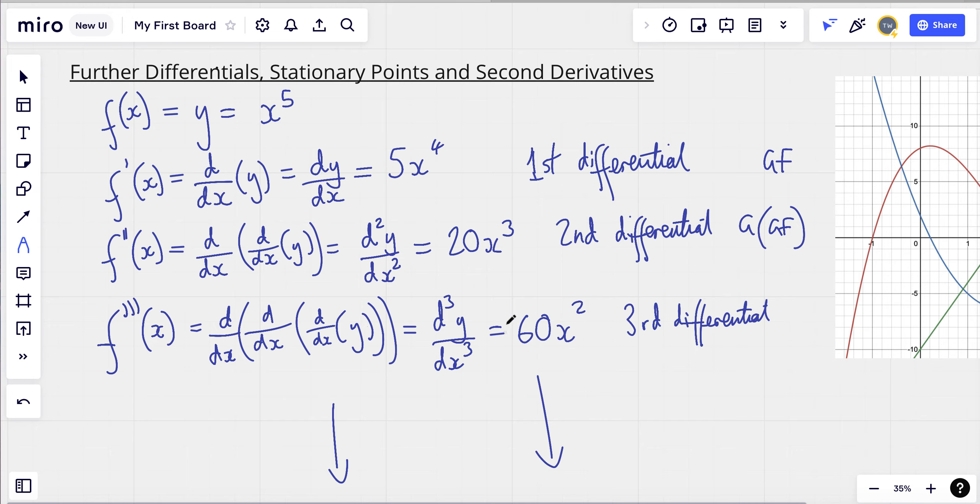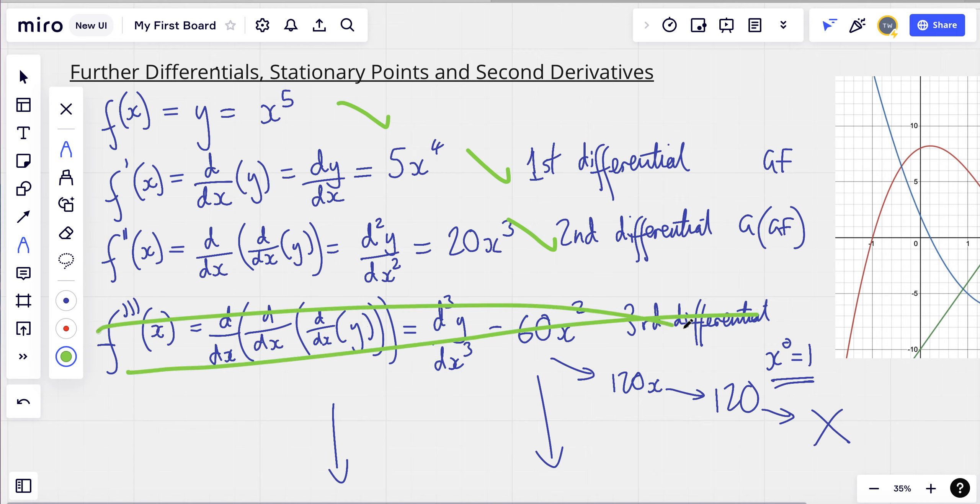This doesn't have an awful lot of use. In year 2, you might use it on some graphs, but very rarely. And I can keep going. If I just took this part, I'd go 120x. That would then become 120. And at that point, we stop, because we have no variable left. As soon as we've got to x to the power of 1, it goes, because x to the power of 0 equals 1. So that's a brief introduction thinking about further differentials.